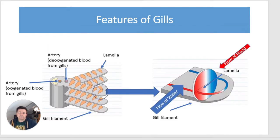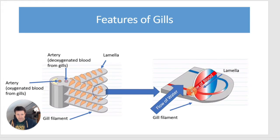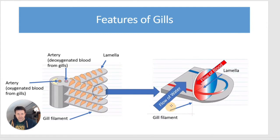Looking more closely at the gill filaments: there are two arteries carrying oxygenated and deoxygenated blood respectively, with two rows of gill filaments at 90 degrees to each other. On them are semi-circular structures called lamellae. Blood capillaries run through the lamellae flowing in one direction, while water flows in the opposite direction — this is the counter current flow.